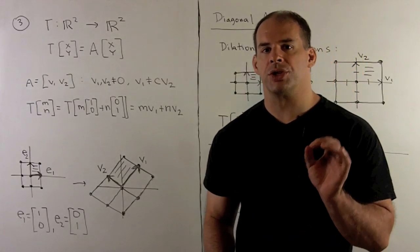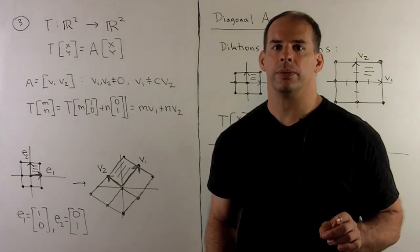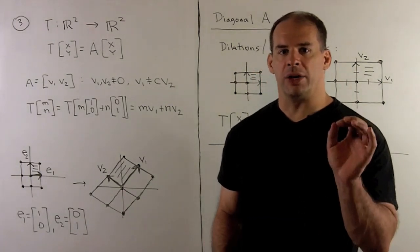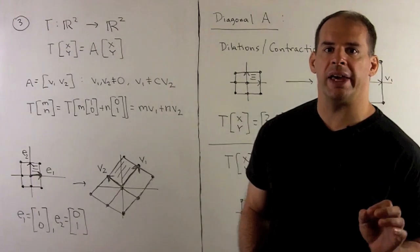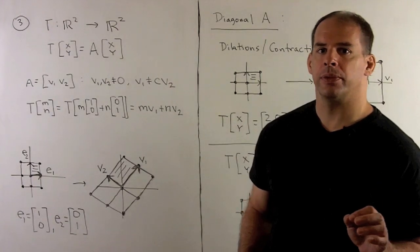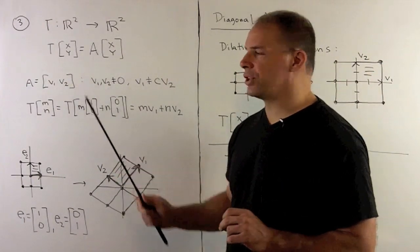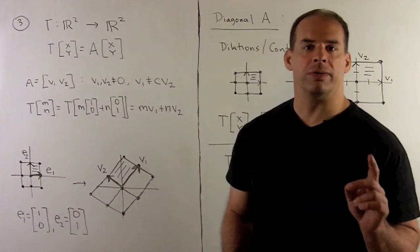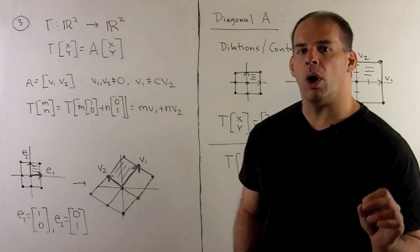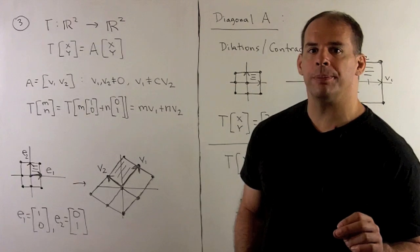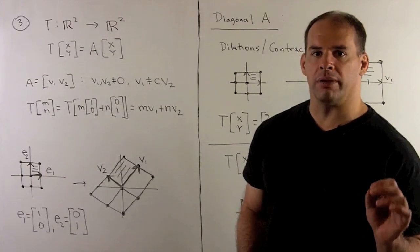Now consider when R2 is carried to all of R2. For the matrix A, we want to exclude our previous two cases. If I write A as columns V1 and V2, then V1 and V2 are not the zero vector, and V1 is not a multiple of V2.